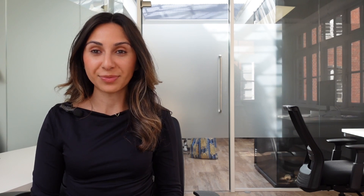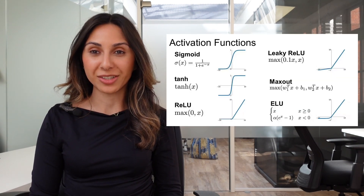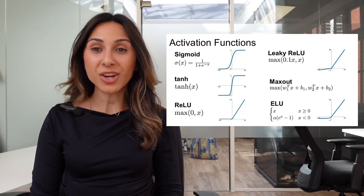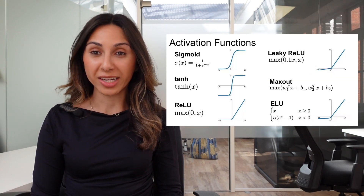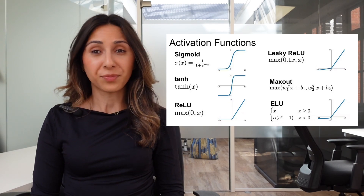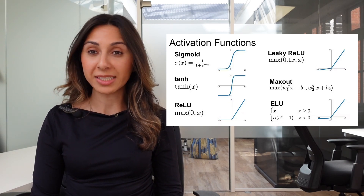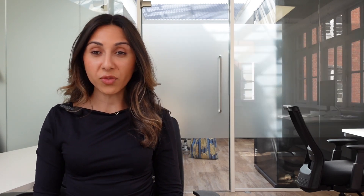To learn complex patterns, CNNs use activation functions like ReLU, Sigmoid, and Tanh. They add non-linearity, allowing the network to solve tough problems, like identifying multiple objects in a scene.